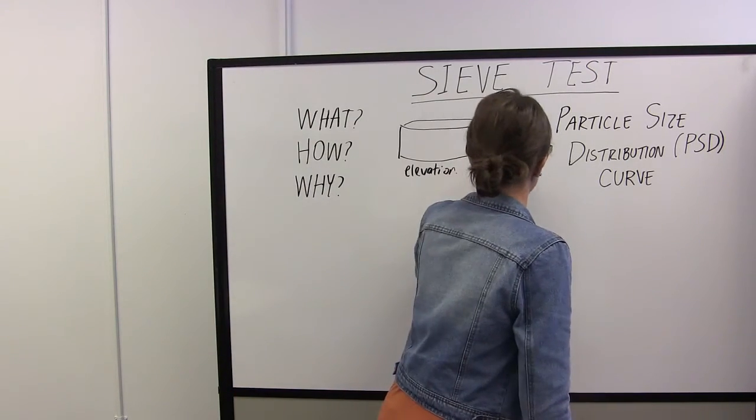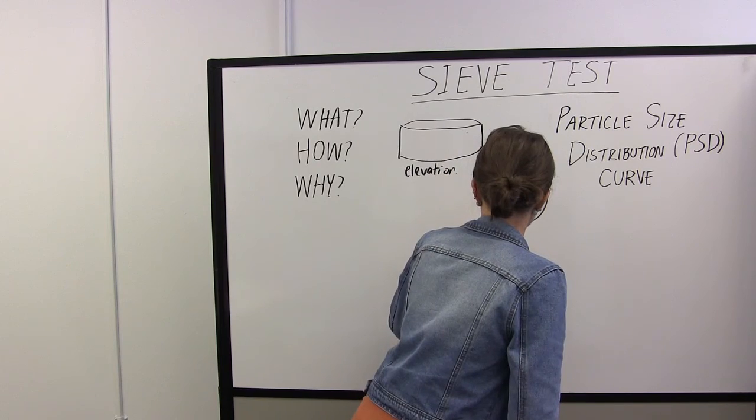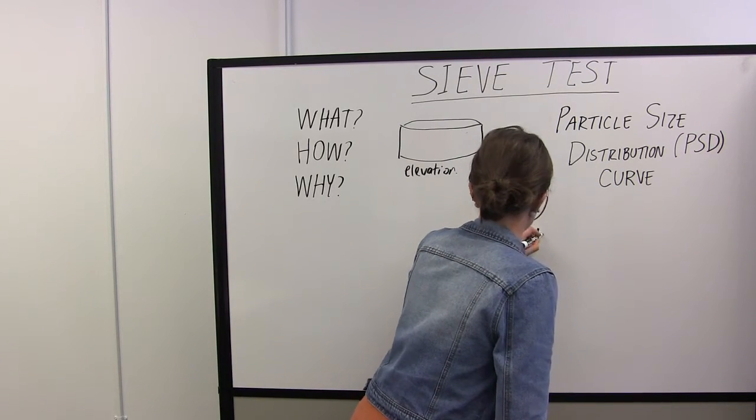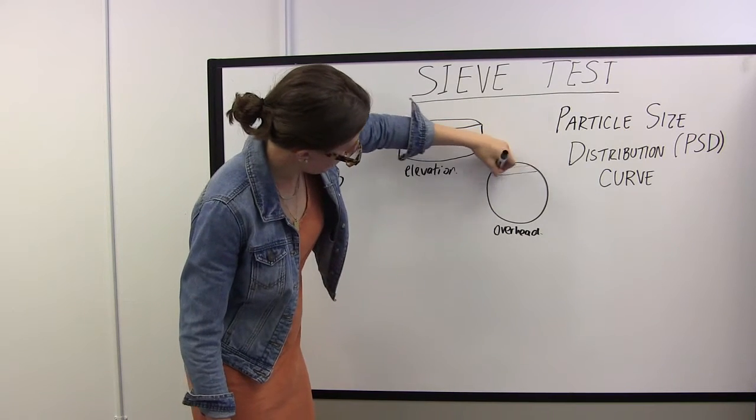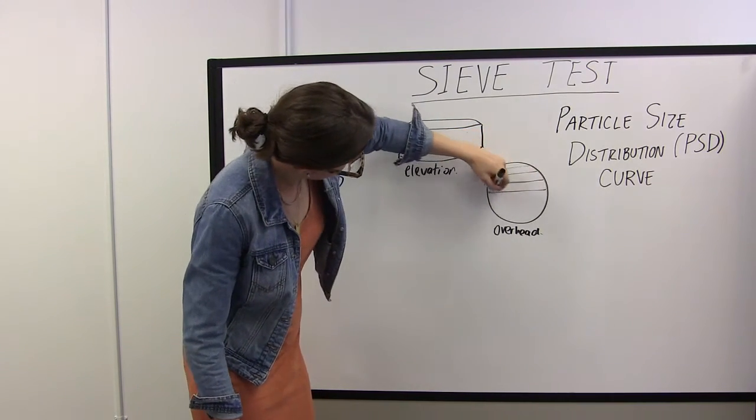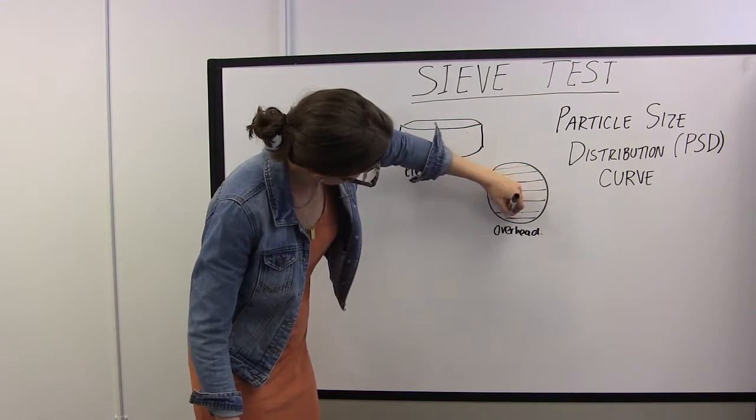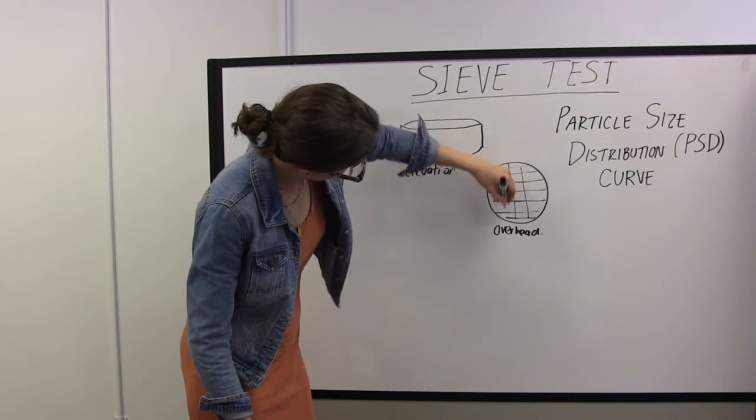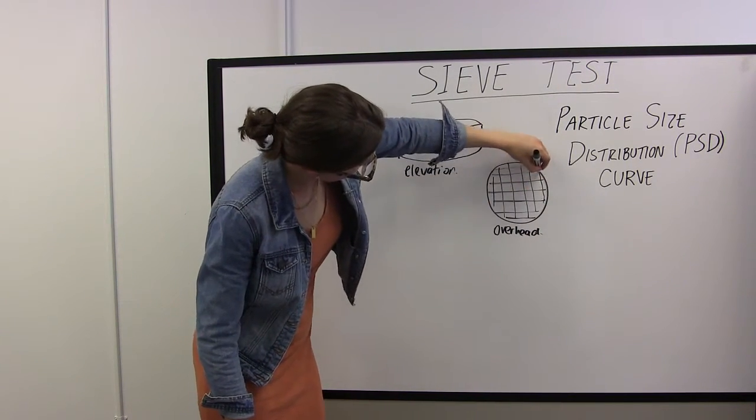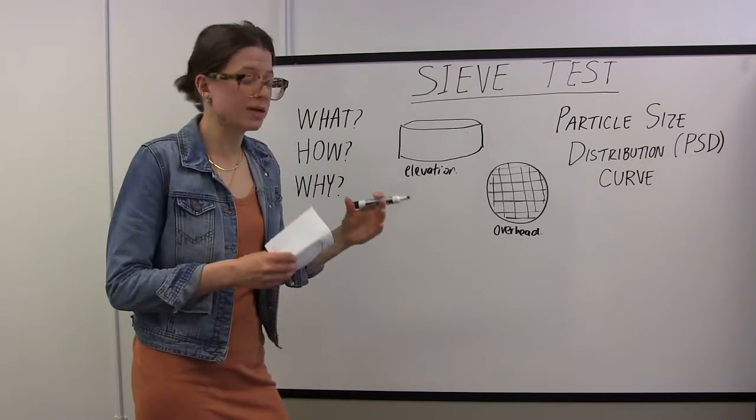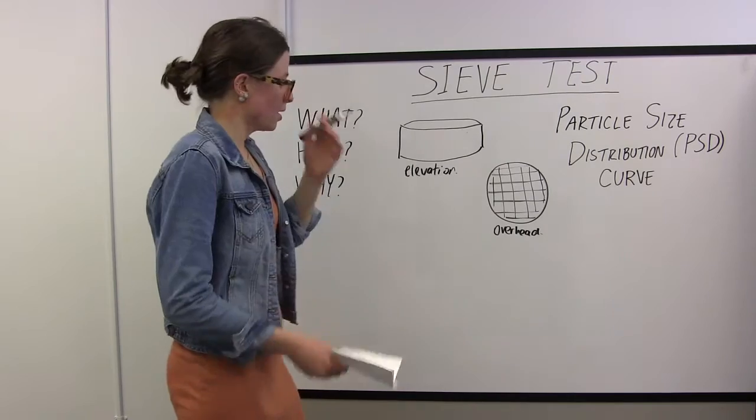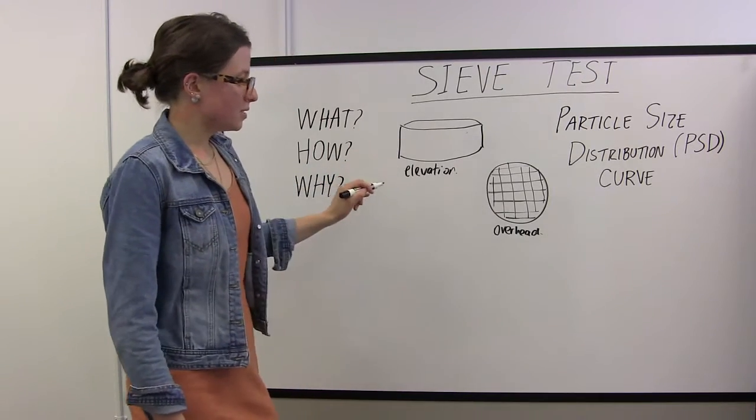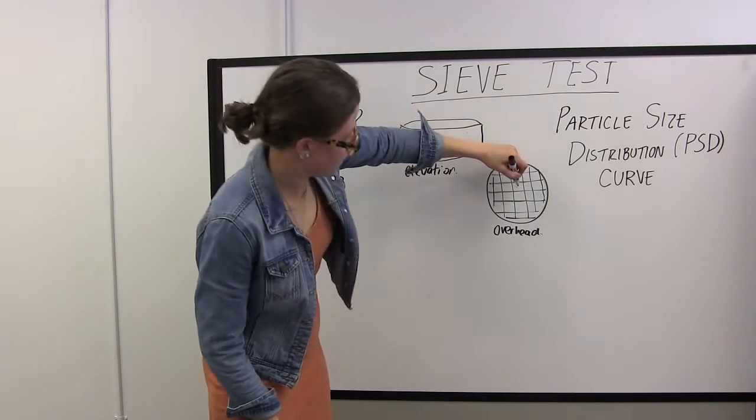...you have a series of wires that form a mesh. The mesh can have really large openings and really small openings that you can't even really see by eye. And the way that we name these sieves is according to this mesh size here.